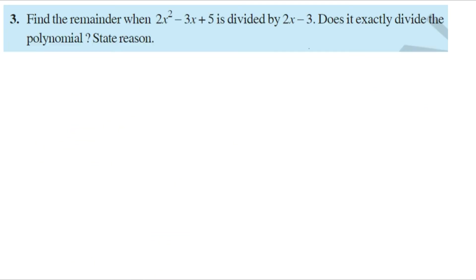Now see the third problem on the same page number 43. Find the remainder when 2x squared minus 3x plus 5 is divided by 2x minus 3. Does it exactly divide the polynomial? First we find the remainder, and then we determine whether 2x minus 3 exactly divides the polynomial.